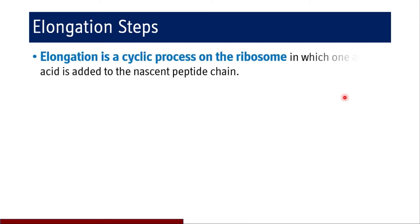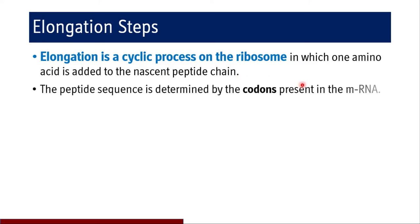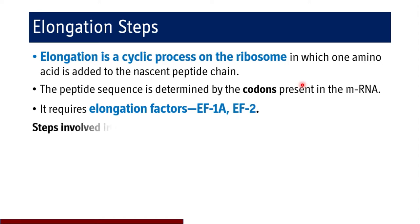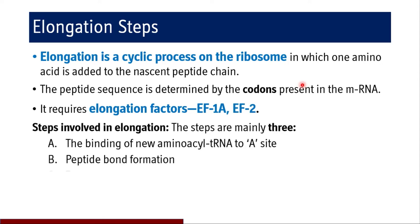Coming to the elongation steps in translation. Elongation is a cyclical process on the ribosome in which one amino acid is added to the nascent polypeptide chain. The peptide sequence is determined by codons present in mRNA. It requires elongation factors EEF1A and EEF2. The three steps involved in elongation are: binding of new aminoacyl tRNA to the A site, peptide bond formation, and translocation.